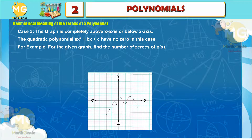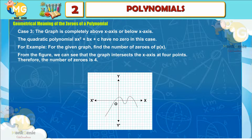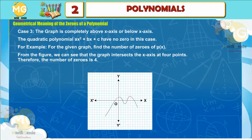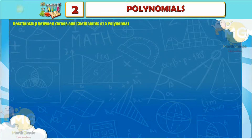For example, for the given graph, find the number of zeros of p(x). From the figure, we can see that the graph intersects the x-axis at four points. Therefore, the number of zeros is 4.